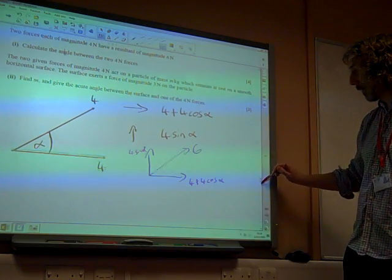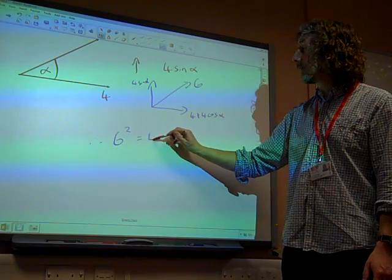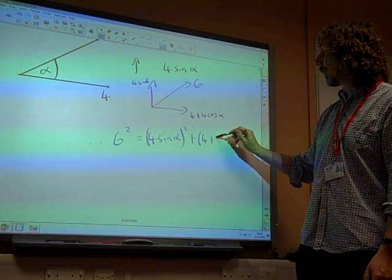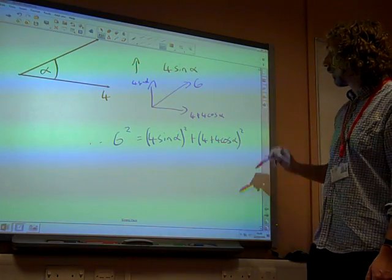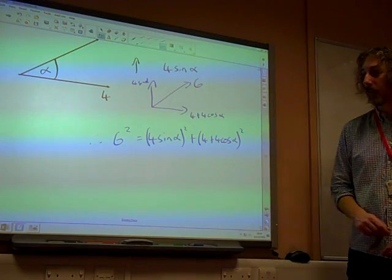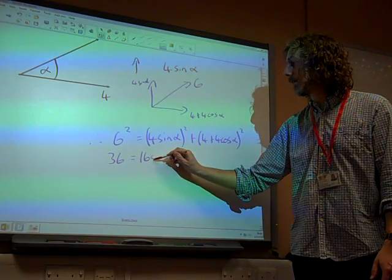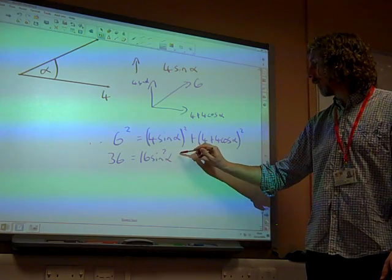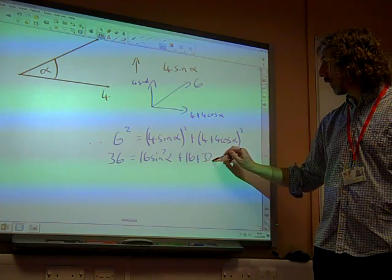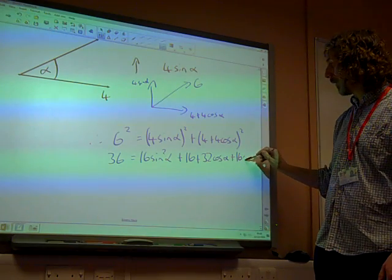Now, that information tells me that by Pythagoras' theorem, 6 squared is 4 sin alpha squared plus 4 plus 4 cos alpha squared. That's a Pythagoras' theorem calculation based on that, which tells me that 36 is 16 sin squared alpha plus 16 plus 32 cos alpha plus 16 cos squared alpha.